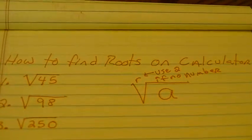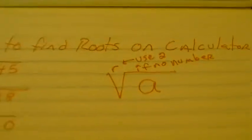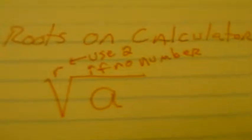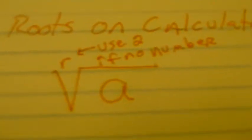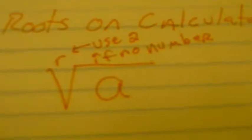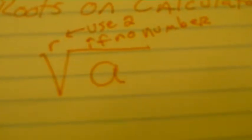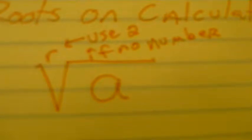On this lesson I'm going to show you how to find roots on the calculator when they're not perfect roots. I'm going to input them like this: where you see the R, I need to put in the index of the radical. Now if there's not a number shown where the R is, you're going to have to put in a 2. Where the A is, that's the number under the radical.